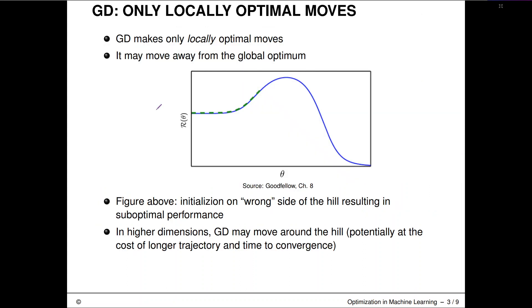Why is that a problem? I hope that's kind of obvious. Gradient descent only makes locally optimal moves. It moves into the direction of steepest descent.